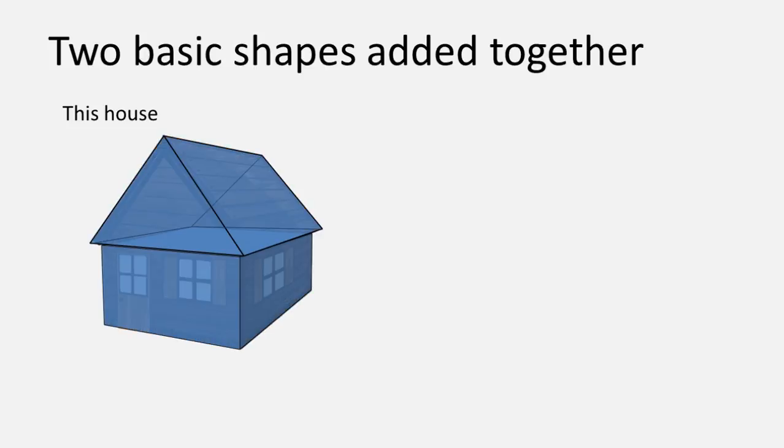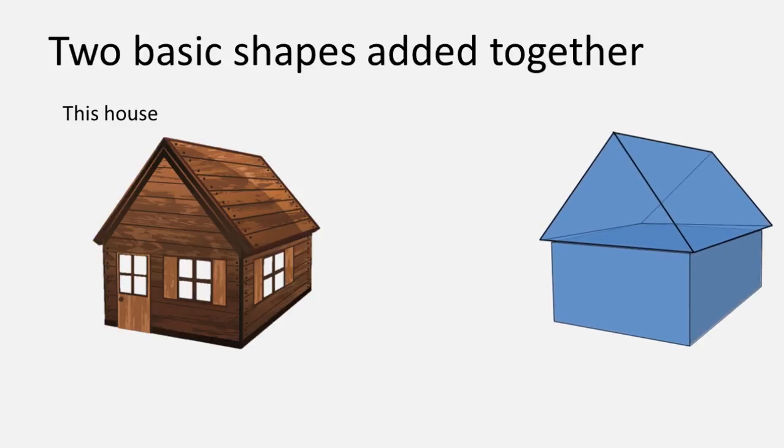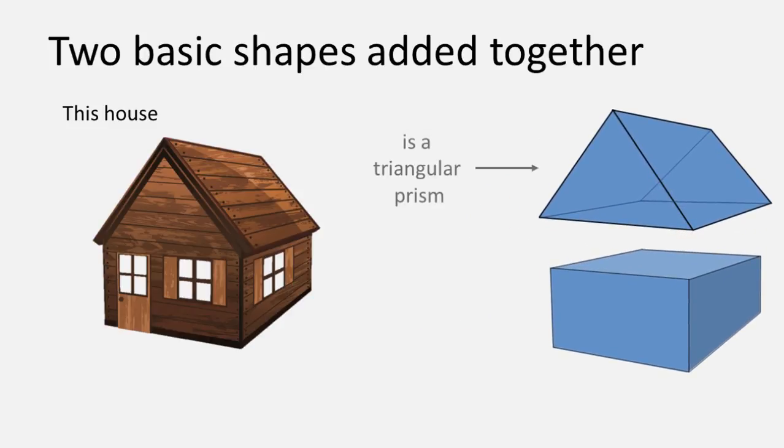Here is an example of a composite shape from two shapes that have been added together. This house is actually a triangular prism sitting on top of a rectangular prism.